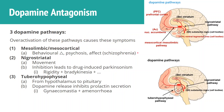There's the mesolimbic/mesocortical pathway, which is the one with the nucleus accumbens and the prefrontal cortex, starting at the VTA. Overactivation of this pathway will result in the symptoms of schizophrenia — notably behavioral changes, psychosis, and changes in affect. They're categorized into positive, negative, and cognitive symptoms, which we'll go into more depth in a bit.